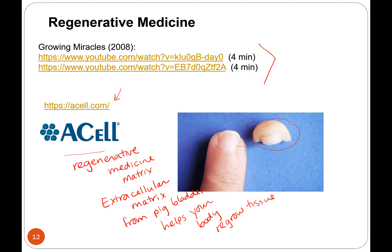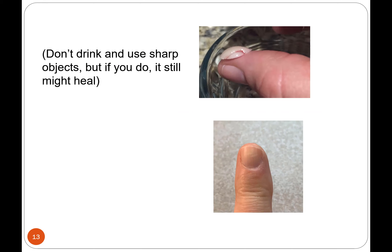This might gross you out — this is my fingertip. My warning is: don't drink and use sharp objects. I was drinking wine and cutting material with a very sharp rotary cutter for a quilt, and one night just sliced off the tip of my finger. I was too embarrassed to go to the emergency room, so I just packed it with band-aids. You could actually see the layers of tissue. My finger has regrown without any regenerative medicine — I do have some weird feelings here — but our bodies are pretty amazing.